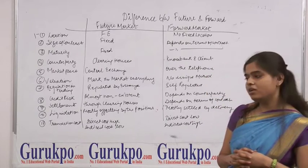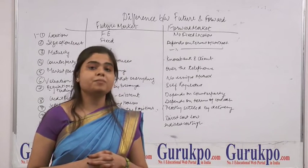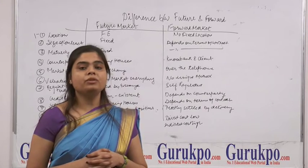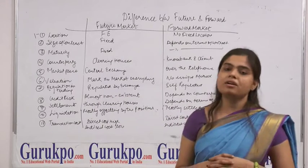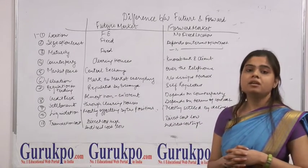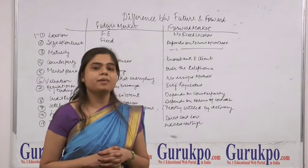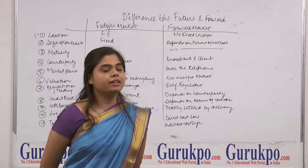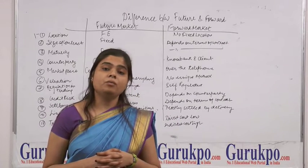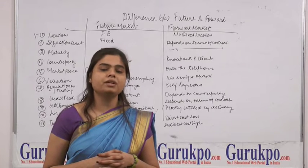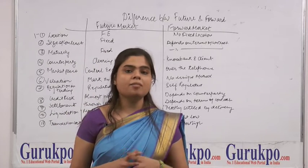The second difference is size of the contract. In the futures market, there is a specific size, quantity, or price predetermined before the contract. In the case of forwards, it totally depends on the terms of the contract and is not specified by the stock exchange. For example, in the Chicago Mercantile Exchange, if you want to trade in the Euro, the minimum size of the contract is 125,000 Euro units. In forwards, there is no specific size — it depends entirely on the terms of the contract.